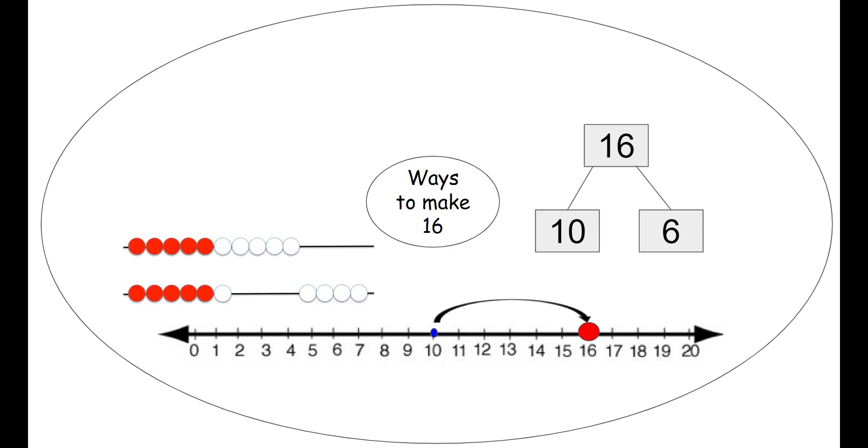We can use our rekenrek to make 16. So we have 10 on the top. And then we slide 6 on the bottom. For 10 and 6, make 16. Same thing with our unifix cubes. We can make 16 with a stick of 10. And then 6 more by themselves. 10 and 6 to make 16.